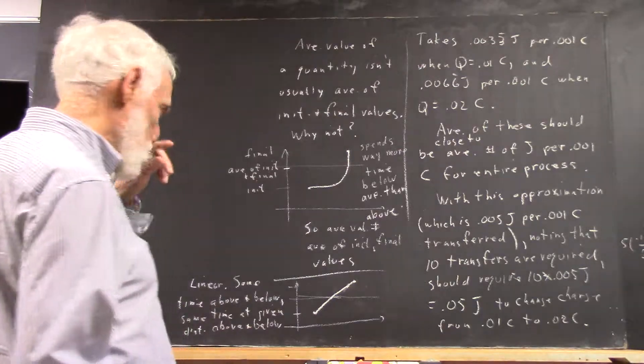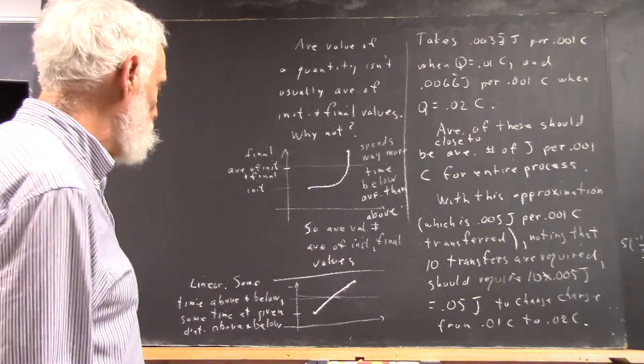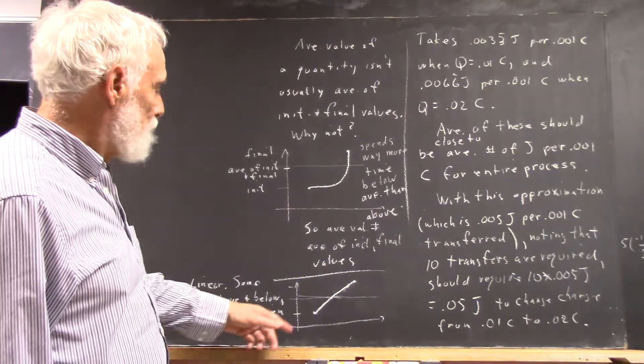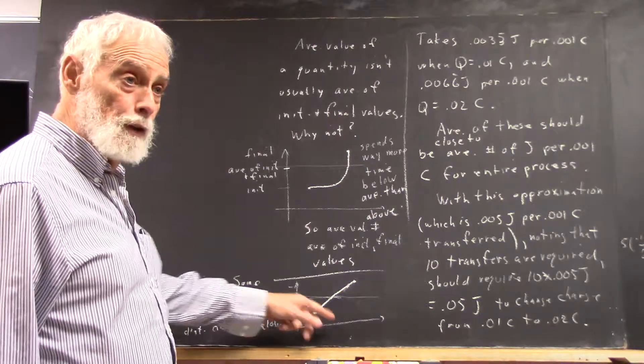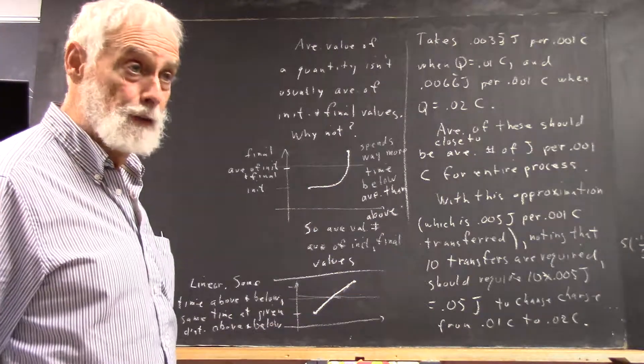So what I'm saying here is that if it's a straight line graph between here and here, then it's going to spend as much time above as below, and you can do that by similar triangles and stuff, right?